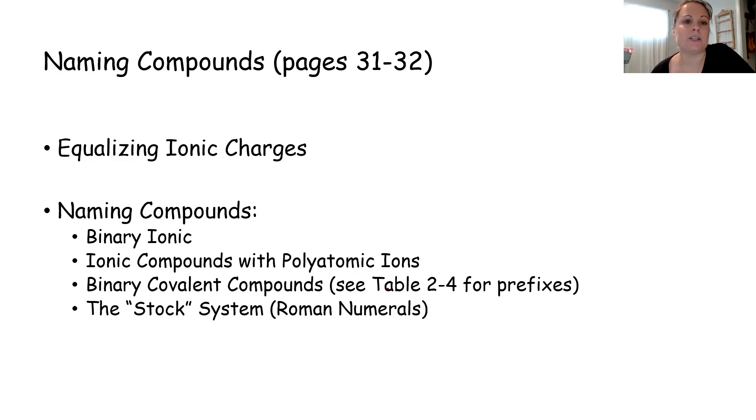Moving on to the next section on naming compounds. This starts on page 31 of your review book. The most important thing you want to do when naming and writing compounds is their ionic charges have to equal each other. So for example, if you were going to have a formula between magnesium and chlorine, magnesium has a charge of plus two and chlorine has a charge of minus one. So writing just MgCl would not be sufficient because of the plus two minus one charge. So you would need two chlorine atoms to balance out one magnesium.